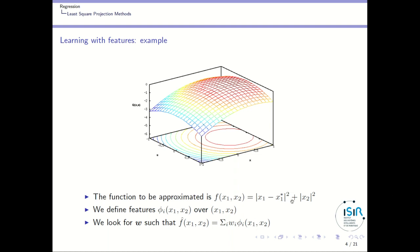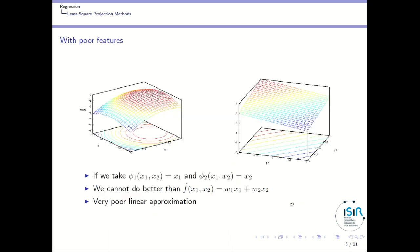Consider the function we want to approximate. One simple thing we can do is take phi1 = x1 and phi2 = x2, so we don't project at all — phi1 and phi2 are in the same domain. In that case the best function we can find with a linear combination is w1*x1 + w2*x2. This is a linear model, and you cannot get a good approximation — it is a very poor linear approximation.